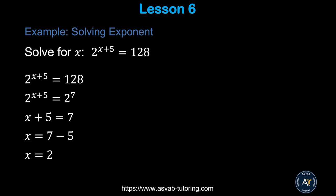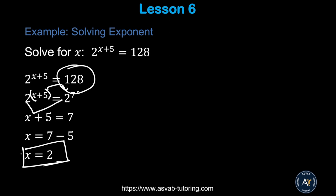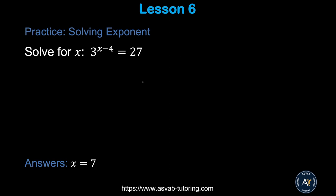For 2^(x+5) = 128: rewrite 128 as 2⁷. Since the bases are the same, set the exponents equal: x + 5 = 7, so x = 2. Pause the video and try the practice problem — make sure you get x = 7.